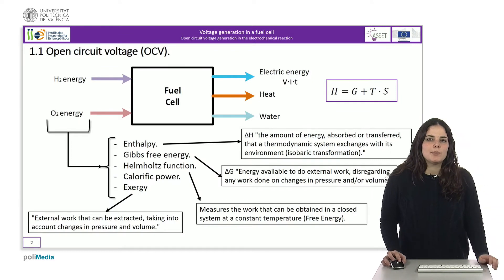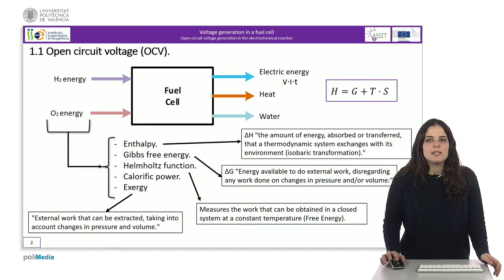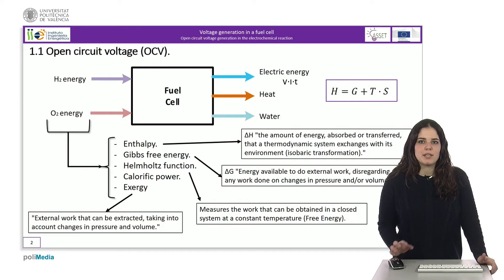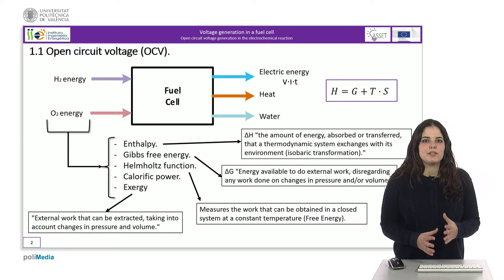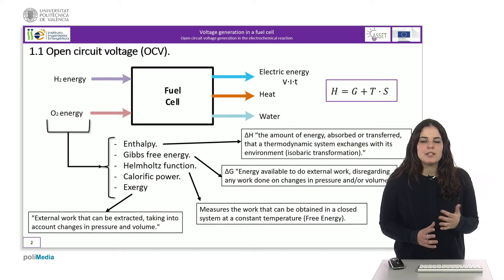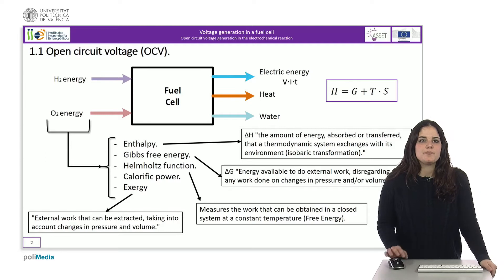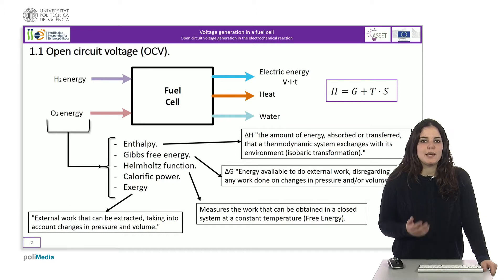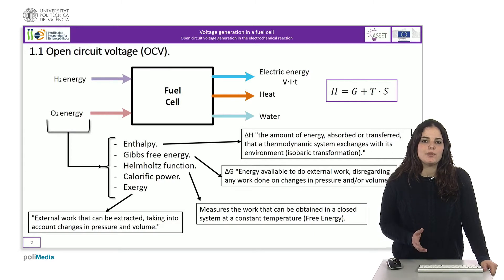In order to calculate the voltage generated by an open circuit fuel cell, we have to analyze two things. Firstly, how the energy of the chemical elements at the entrance of the cell is defined — that is, the reactants being hydrogen and oxygen. Secondly, the energy resulting from the combination of both reactants, which will be the electrical energy obtained, the heat generated in the reaction, and as a byproduct, water.